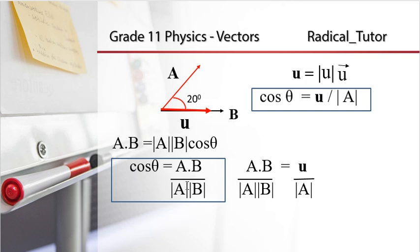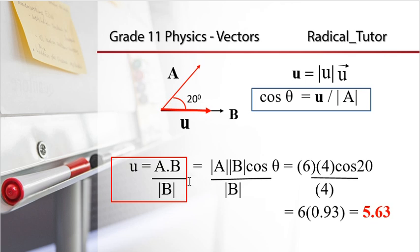So the component of A along B equals magnitude of A times cos theta, which is 6 times cos 20 degrees, giving approximately 5.64 units.